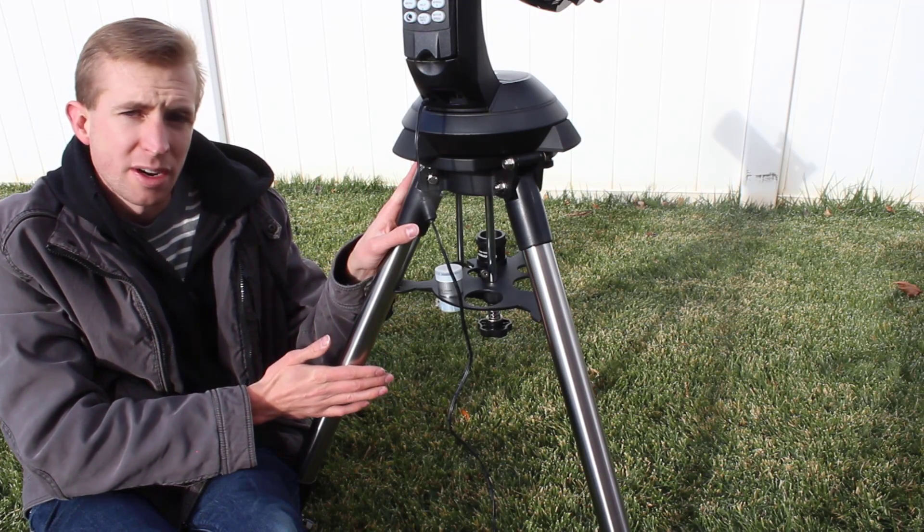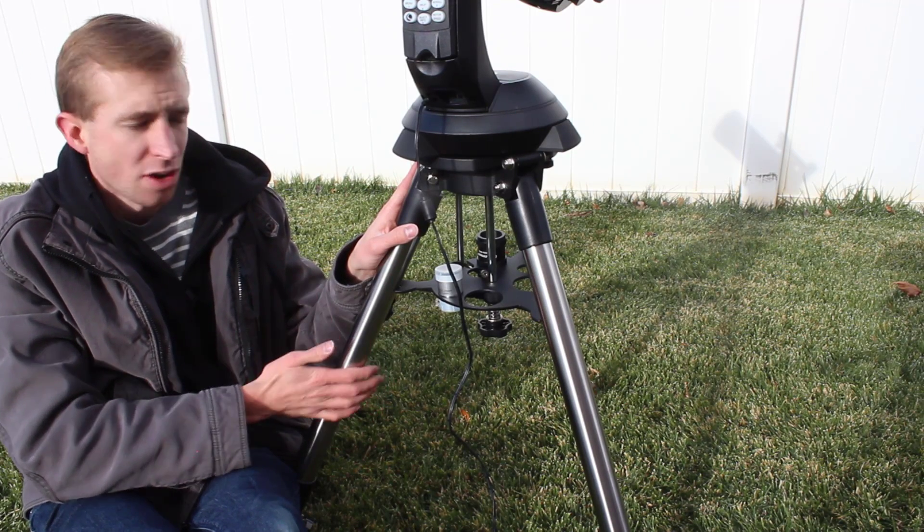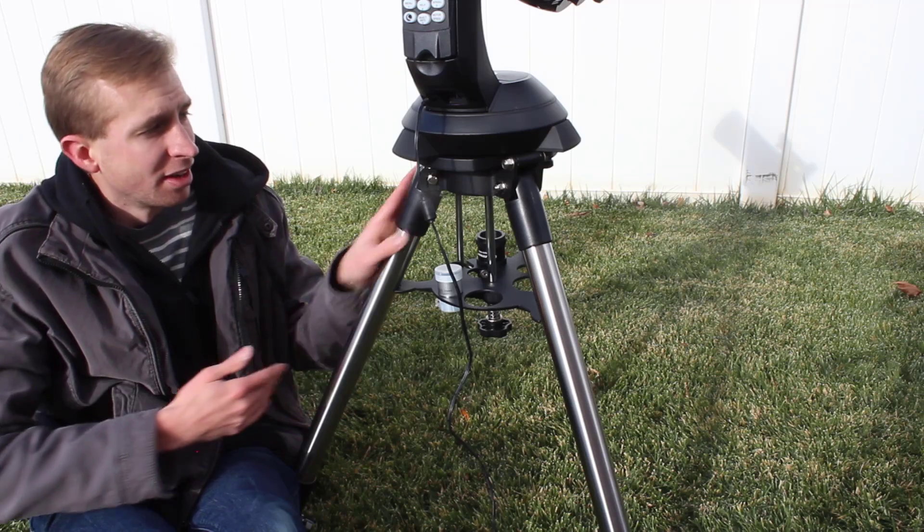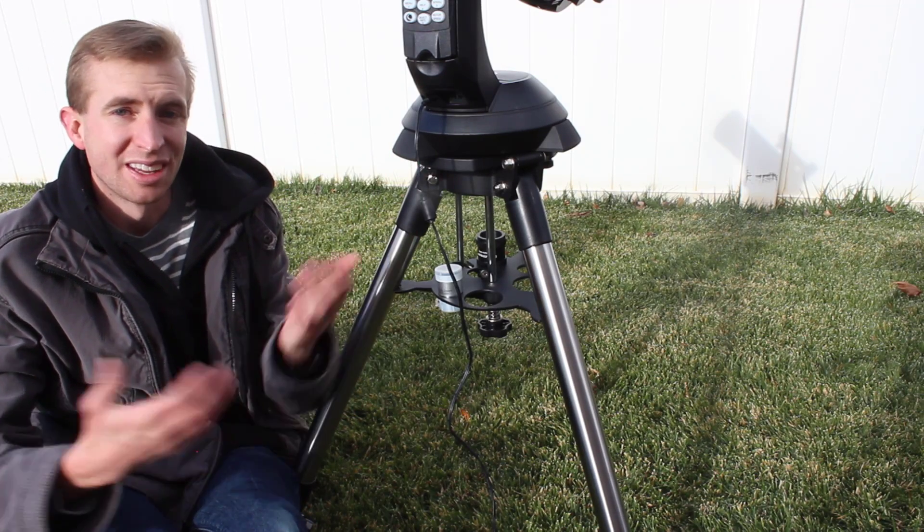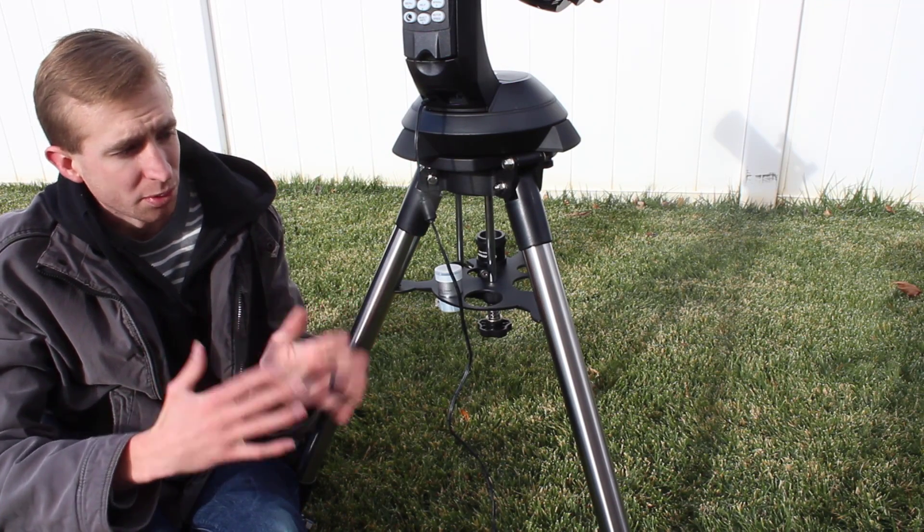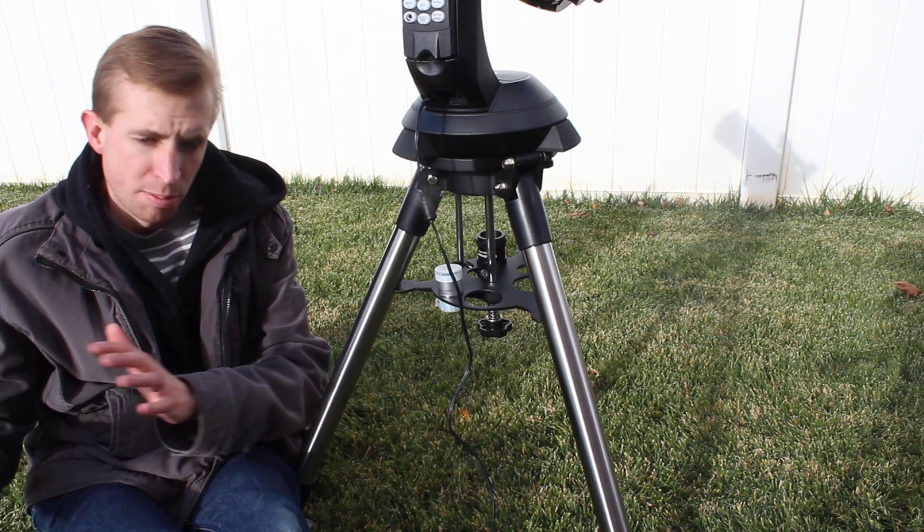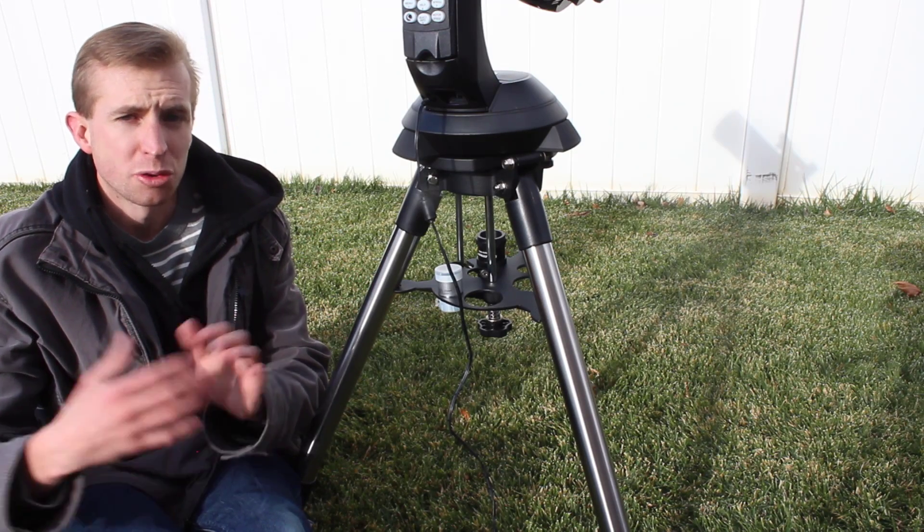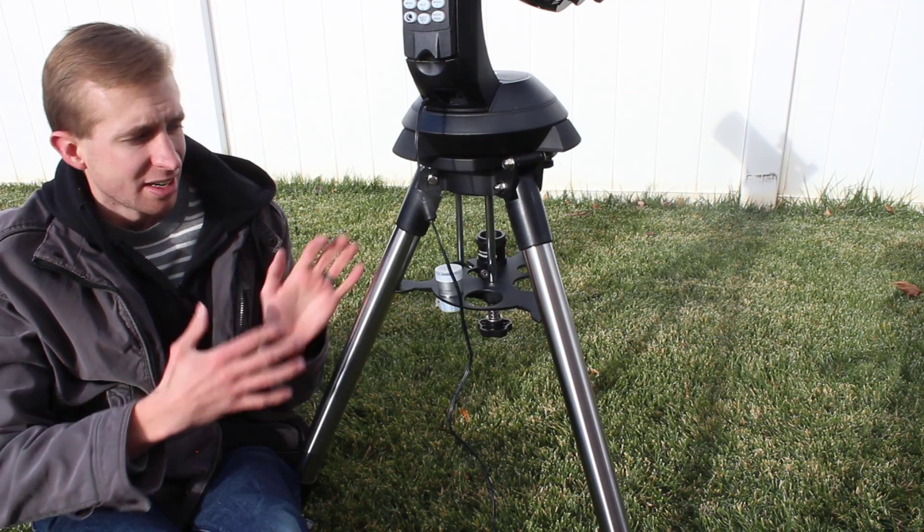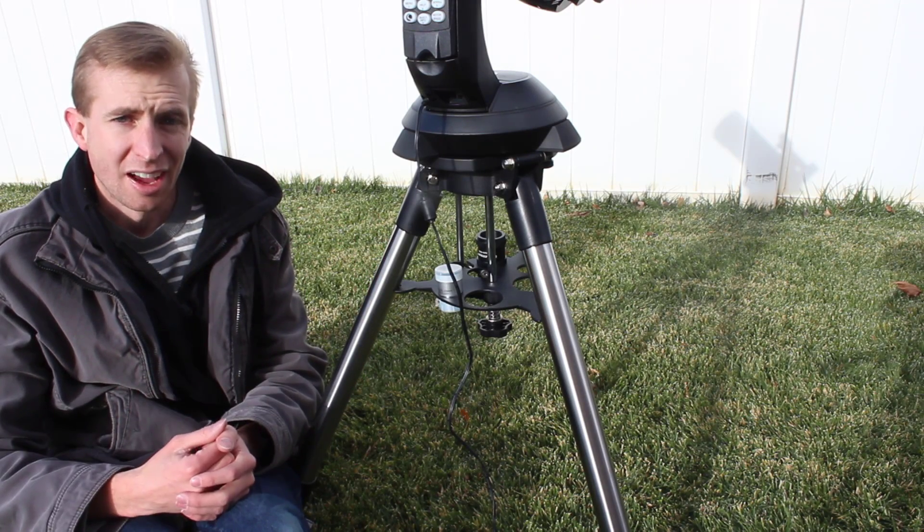And for the Nexstar 4SE and 5SE, this tripod only weighs 10 pounds, and the mount is only 7 pounds. So it's very portable if you need to pick up your telescope and move it to somewhere else in your yard or if a tree gets in the way while you're observing, while you're camping. It's very easy to move this, do a new SkyAlign, and in like two minutes, you can be up and running again.